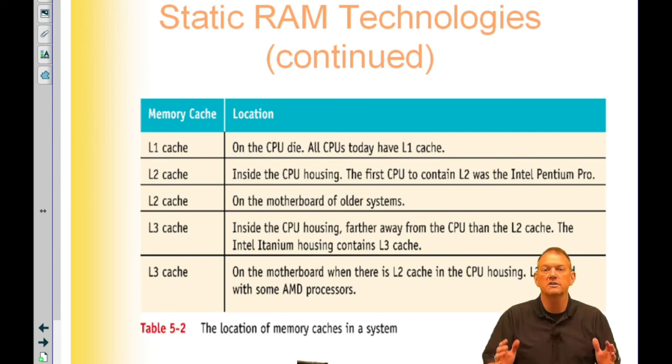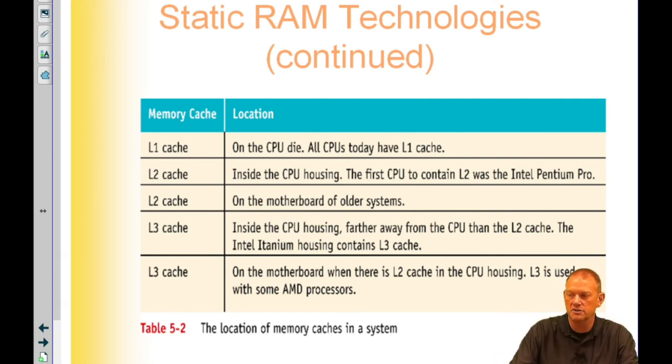We already learned this last chapter, right? What the difference between L1, L2, and L3 cache is. Knowing that L1 is per core, it's right on the CPU core of the processor itself, whereas L2 is slightly off of it, and L3 is that shared cache, also that Intel Smart Cache that we talked about last chapter.